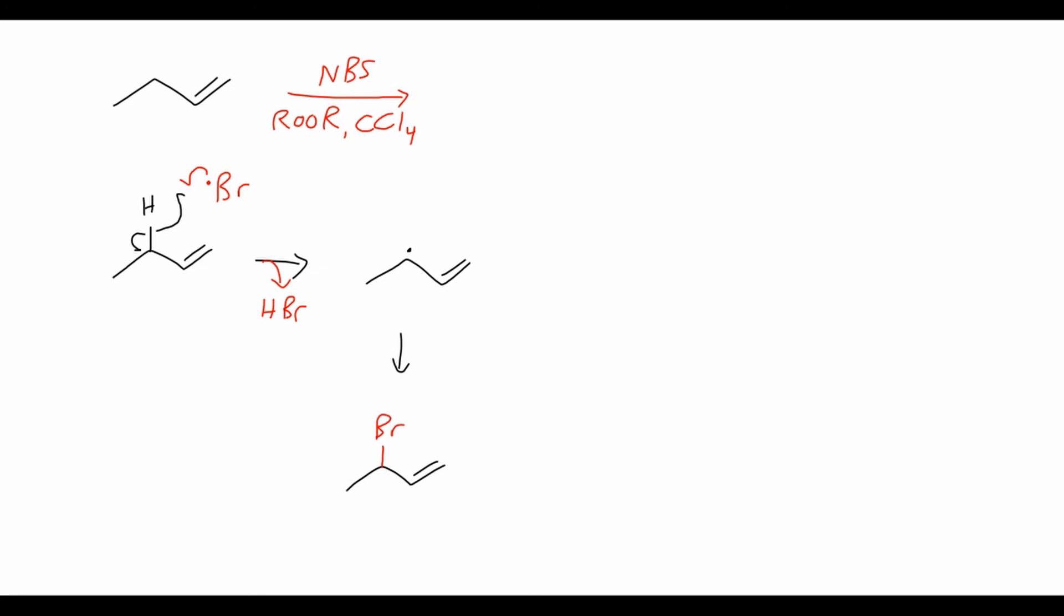However, we can also form another product. So if you notice, remember that anions are not the only thing that's stabilized by delocalization, so we can also stabilize radicals. So what it can do is have this single electron here move to form a double bond between these two carbons, and then this will break the double bond homolytically, giving one electron to form this double bond between the two and three carbons, and the other going to the terminal carbon.